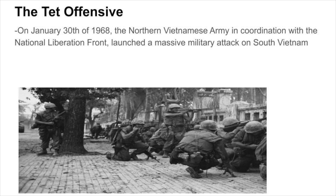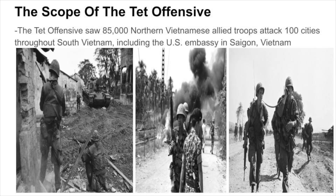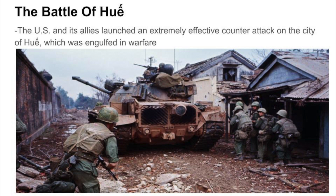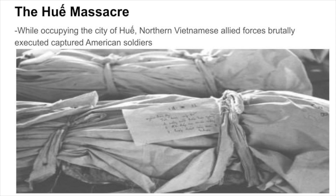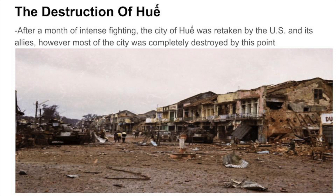On January 30th of 1968, the Northern Vietnamese Army, in coordination with the National Liberation Front, launched a massive military attack on South Vietnam organized by General Bo Nguyen Jap. This surprise attack became known as the Tet Offensive. The Tet Offensive saw 85,000 Northern Vietnamese Allied troops attack 100 cities throughout South Vietnam, including the U.S. Embassy in Saigon. The U.S. and its allies launched an effective counterattack on the city of Hue, where Northern Vietnamese Allied forces had brutally executed captured American soldiers. After a month of intense fighting, the city was retaken, though most of Hue was completely destroyed.